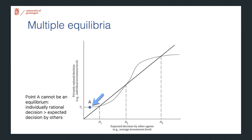So A could not actually happen because if you expect others to invest more, you will increase your investments as well until you get to a point where the privately rational decision is equal to the expected decision by others. So you basically follow what everybody else is doing and you form your expectations on that. So any equilibrium will be on this diagonal line.